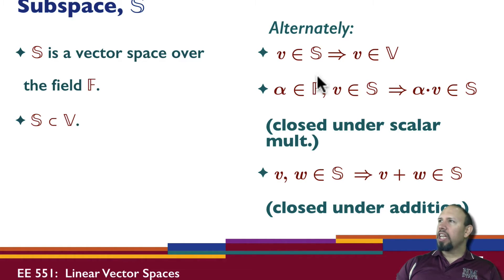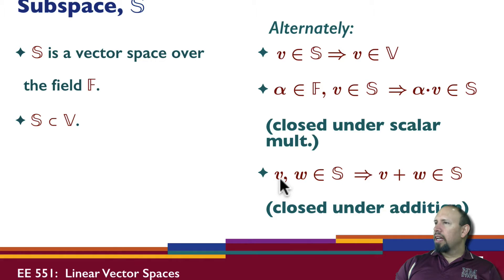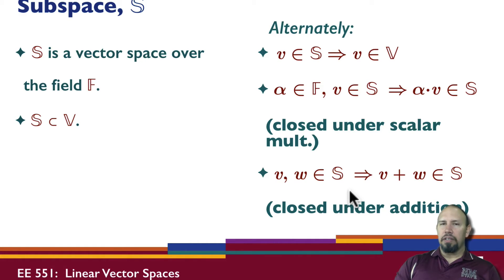Alternatively, you can say it this way: if v is in S, then v must be in the vector space. For any scalar in the field and any vector in the subspace, the product is also in the vector space — that is, it is closed under scalar multiplication. Also, if you have two vectors in the subspace, the sum of those two vectors is also in the subspace, so the set is closed under addition.